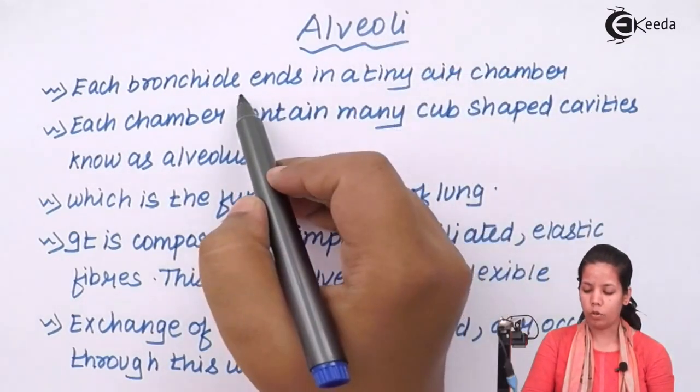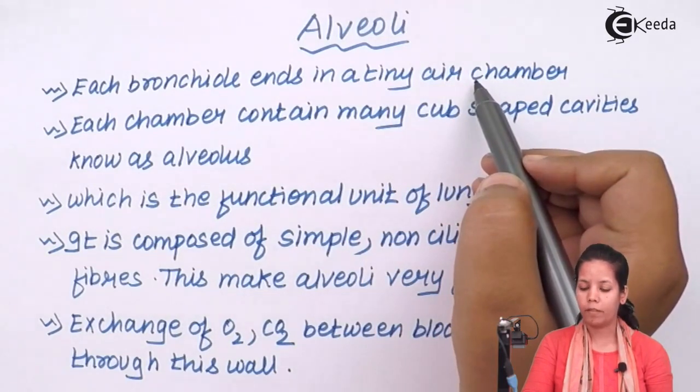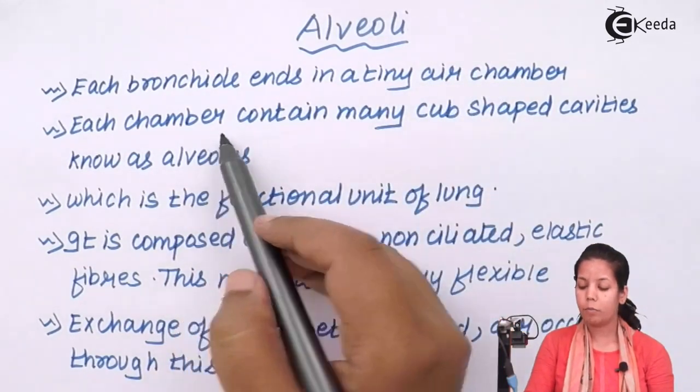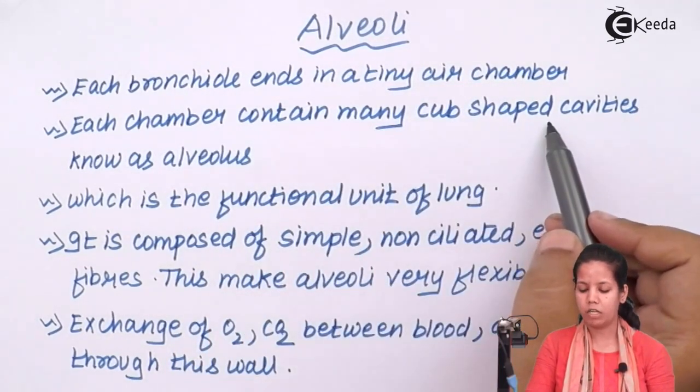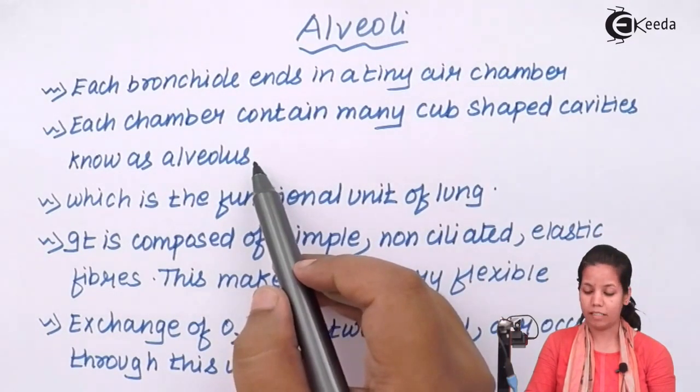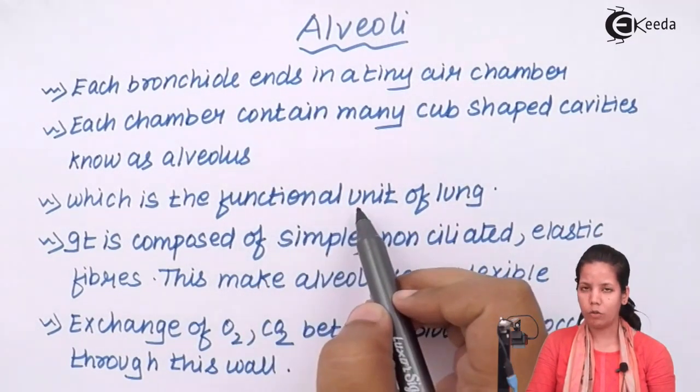Each bronchiole ends into tiny air chambers which are alveoli. Now each chamber contains many cup-shaped cavities which are nothing but alveolous cavities, which is a functional unit of lung.